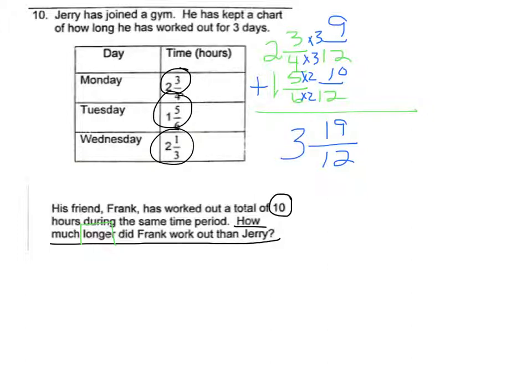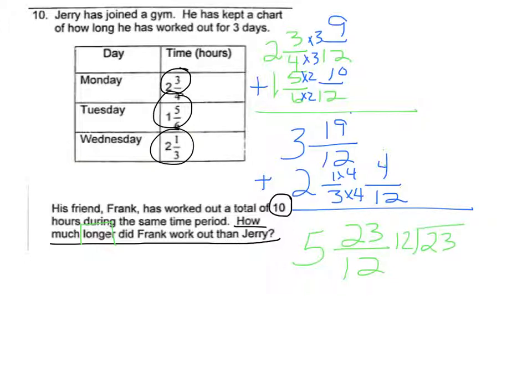Then we can add that to 2 and 1 third, still keeping 12 as our common denominator, times 4 times 4. So then we've got 19 twelfths plus 4 twelfths. So 19, 20, 21, 22, 23 twelfths. And then 3 plus 2 is 5. 23 twelfths is an improper fraction, so we've got to turn that into a mixed number. Goes in once with 11 twelfths left over. So all together, all together Jerry worked out 6 and 11 twelfths hours.